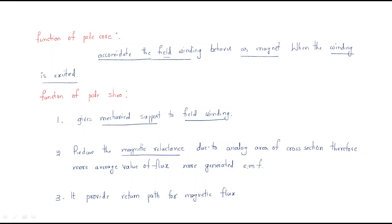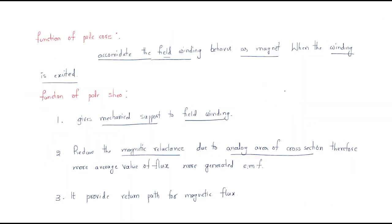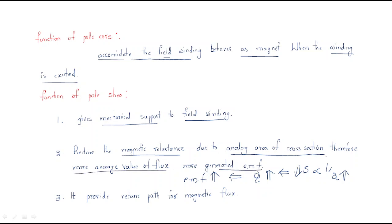Second, the pole shoe reduces magnetic reluctance due to its larger cross-sectional area. Since reluctance is inversely proportional to the cross-sectional area, the larger area of the pole shoe decreases reluctance. When reluctance decreases, flux increases, and when flux increases, more EMF is generated. This provides a higher average value of flux and more generated EMF.